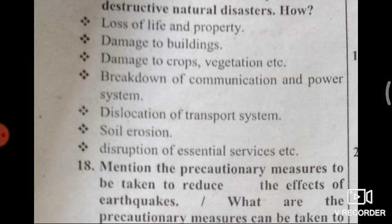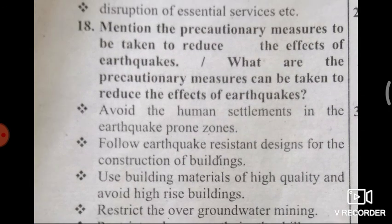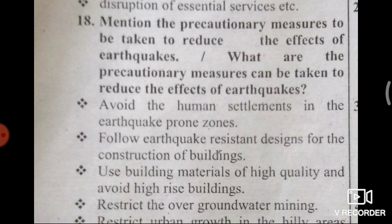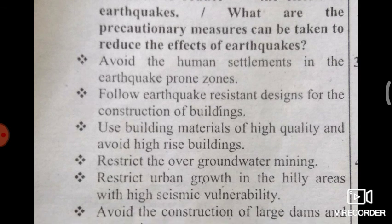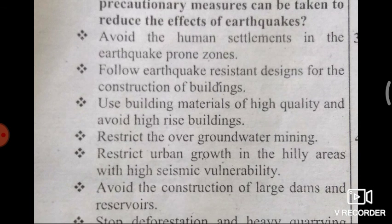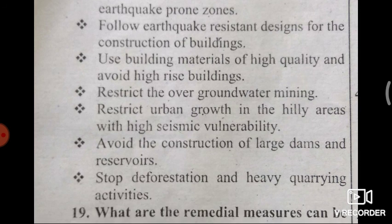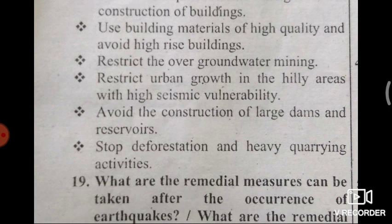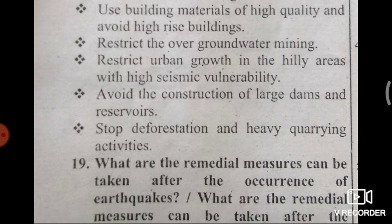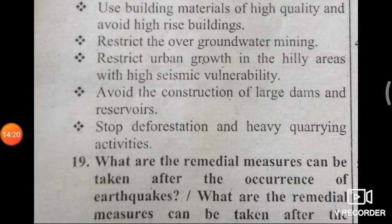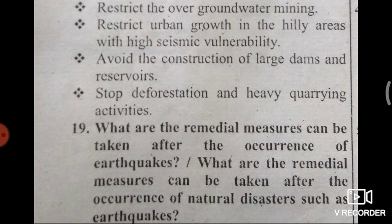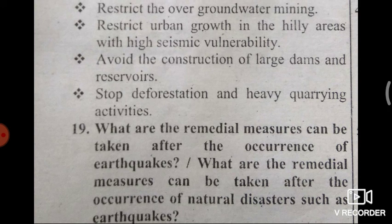Next question: What precautionary measures can be taken to reduce the effects of earthquakes? Answer: Avoid human settlements in earthquake-prone zones; follow earthquake-resistant designs for construction of buildings; use high-quality building materials and avoid high-rise buildings; restrict underground water mining; restrict urban growth in hilly areas with high seismic vulnerability; avoid construction of large dams and reservoirs; and stop deforestation and heavy quarrying activities.